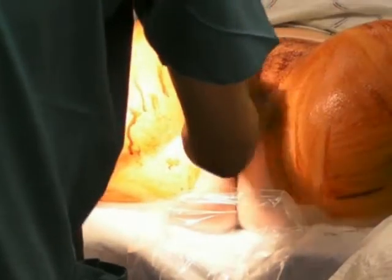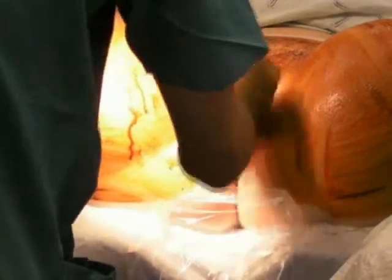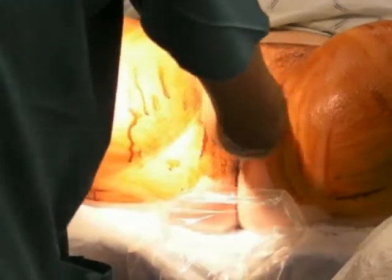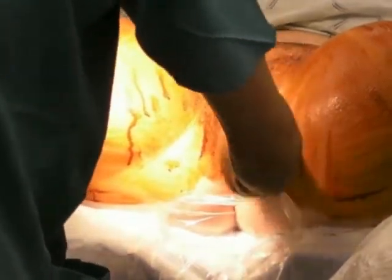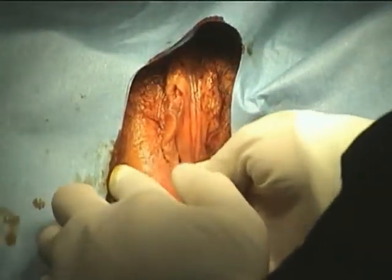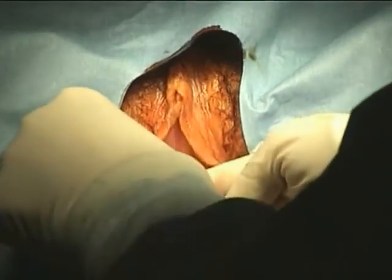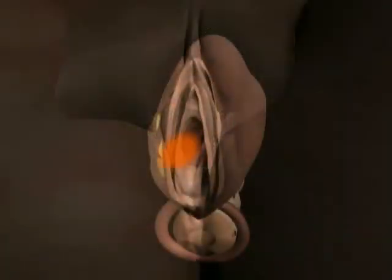Place the patient in the lithotomy position and cleanse the perineum with antiseptic solution. Palpate the cyst to clearly visualize its size and location. Place a block over a 2 cm diameter area over the vaginal sidewall that overlies the surface of the cyst.